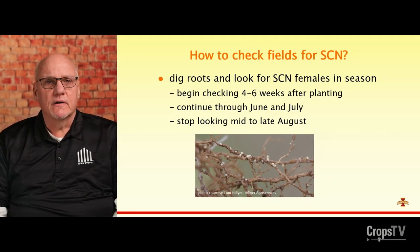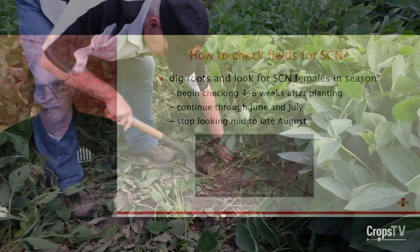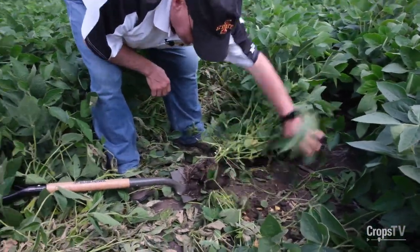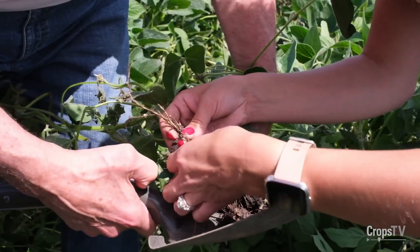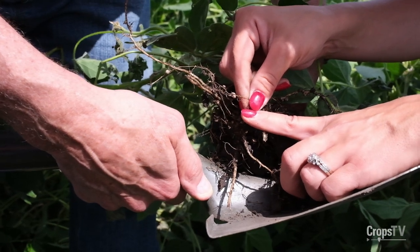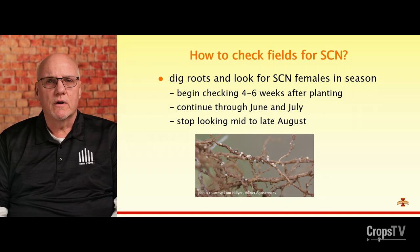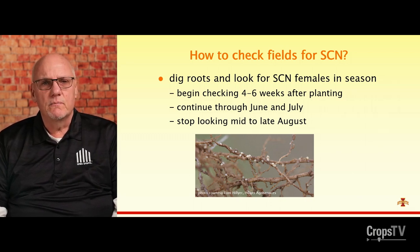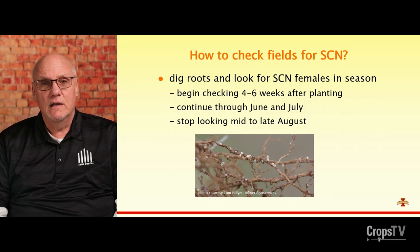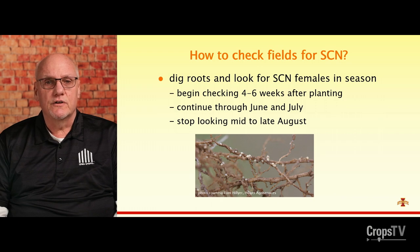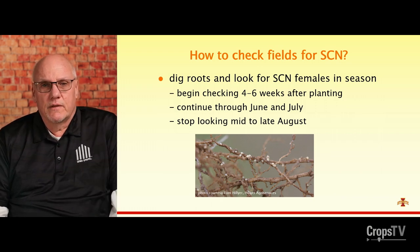How would one check a field for SCN? The most direct way is to see it with your own eyes. We're big proponents of getting out and digging roots and looking for the white females — small, whitish-yellow round objects about the size of a period at the end of a printed sentence. Starting four to six weeks after planting, you can dig roots, shake off soil, and look for these females through June and July. Once into August, new ones form on roots two to four feet deep and are hard to reach.